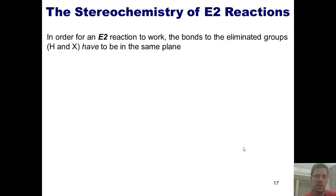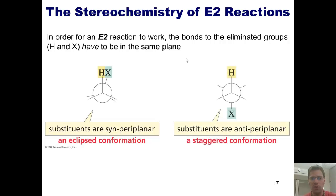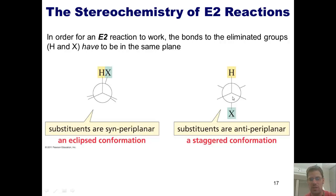There's another nuance we need to consider when we think about E2 reactions. As I mentioned earlier, in order for an E2 reaction, the bonds of the eliminated groups — this hydrogen that's getting removed, and the leaving group, abbreviated as X — have to be in the same plane. However, they also have to be anti to each other. So I cannot do an elimination if my hydrogen and my leaving group are both pointing in the same direction — in other words, cis to each other.